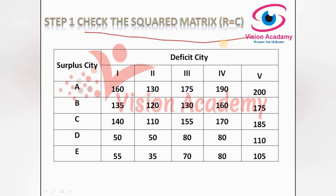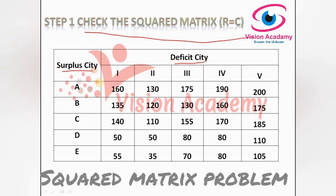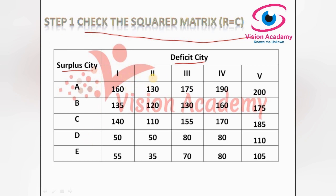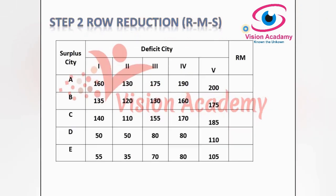Let us check the squared matrix — whether it is balanced or unbalanced. We have two categories: surplus cities and deficit cities. We have five surplus cities and five deficit cities, which means the number of rows equals the number of columns. This is a squared matrix, which means it is a balanced assignment problem. So let us start with the row reduction.